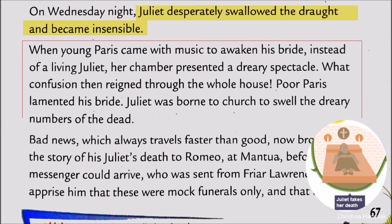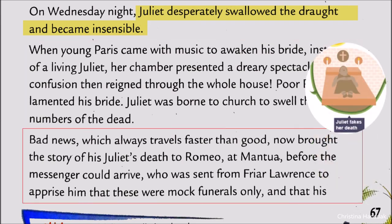A few minutes later, Paris came with music to awaken his bride, but the situation was something different. Juliet's chamber presented a dreary situation and all the people looked gloomy. Bad news travels faster than good — so Romeo received the message that his beloved Juliet was no more.